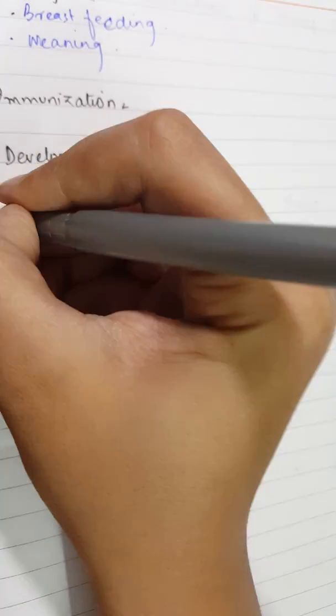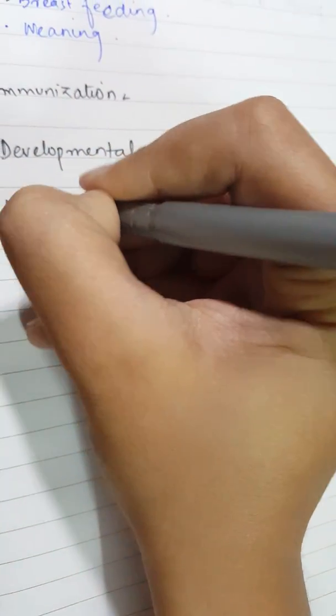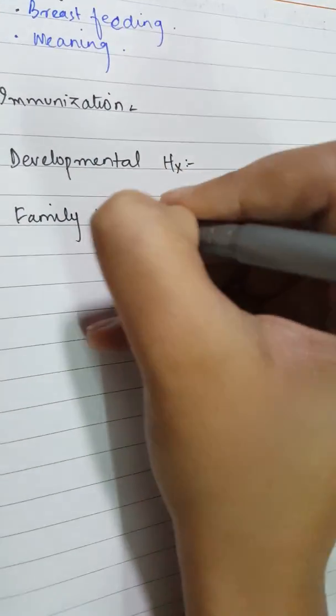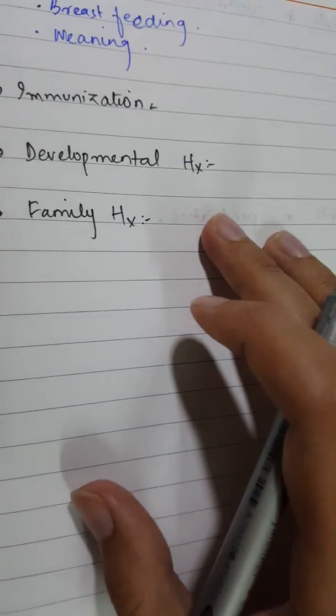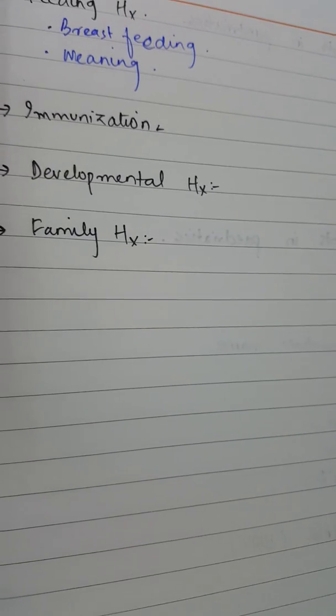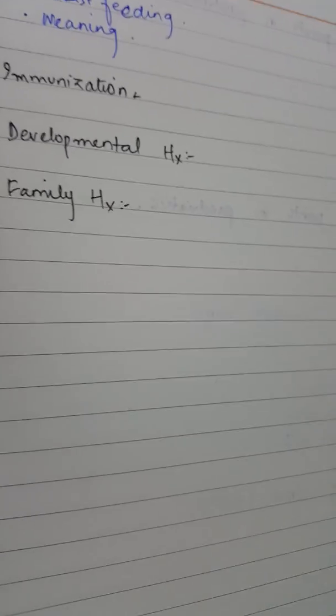The next heading is family history. Under this heading, you ask about the patient's parents and grandparents — any chronic illnesses they are suffering from, the ages of the parents, and if any disease like asthma, diabetes, or hypertension runs in the family. You also ask about any illnesses that the patient's brothers or other siblings have.